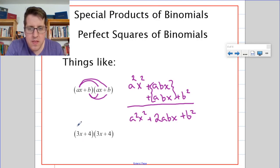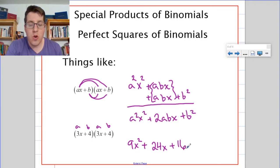So here's what that means. If I had to multiply these together, I would say that a is 3 and b is 4. So a squared would be 9x squared plus 2 times a times b. So 2 times 3 times 4, that's 24x plus b squared, which is 16. This shortcut will really help you with special products of binomials. Have a good one. Try those Khan Academy exercises. Talk to you later.